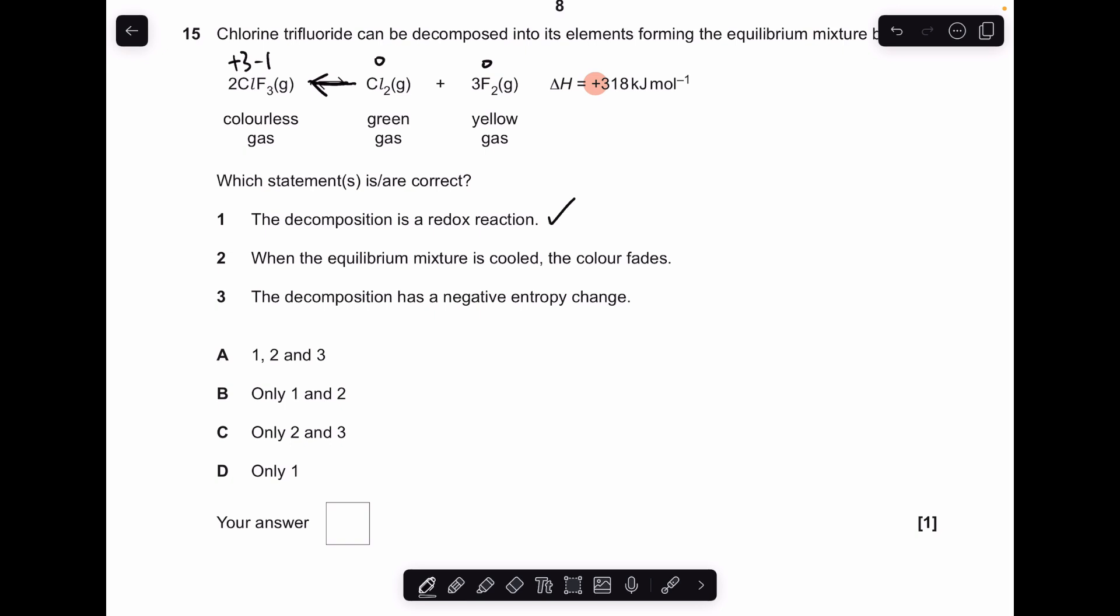And that's the colourless side. So that's right. Decomposition has a negative entropy change. So we're interested in the moles of gas left and right. So this has actually got a positive entropy change because you're going from 2 moles of gas on the left to 4 on the right. So that statement's wrong. So 1 and 2 only. So B. And that's it.